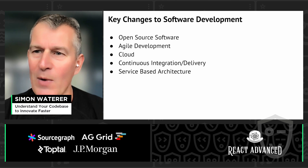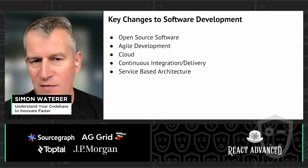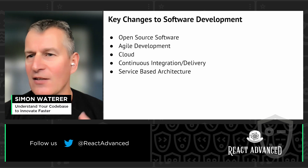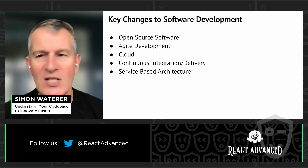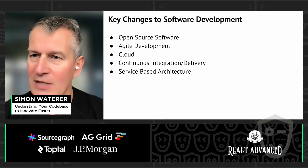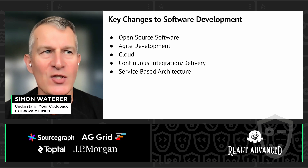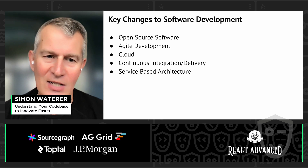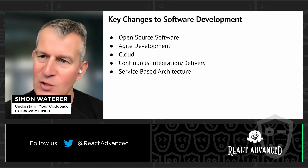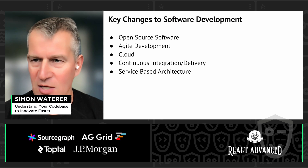The last two changes are continuous integration and delivery, which are very aligned to agile development. The focus is on testing and frequently delivering and deploying software much more rapidly — shrinking that loop, but also enabling us to test smaller changes and get additional feedback more quickly. Ideally, when you do run into problems, the set of changes you need to evaluate to find the root cause is smaller.